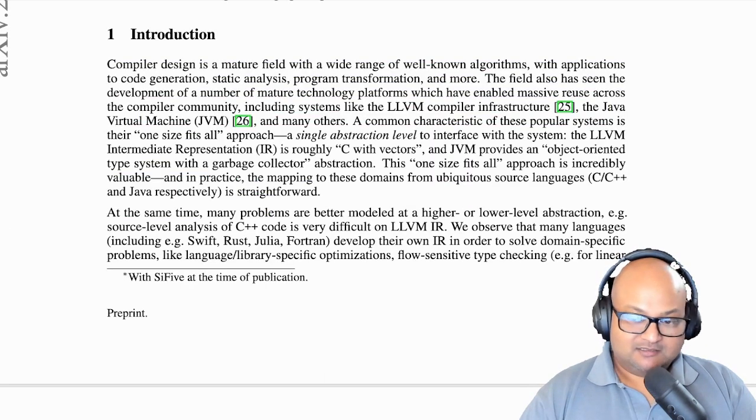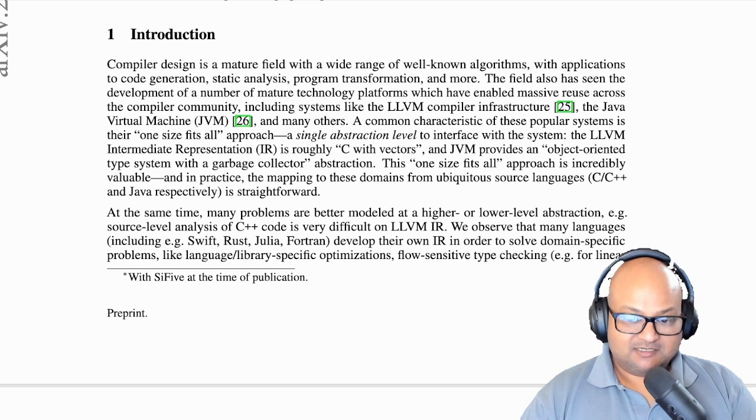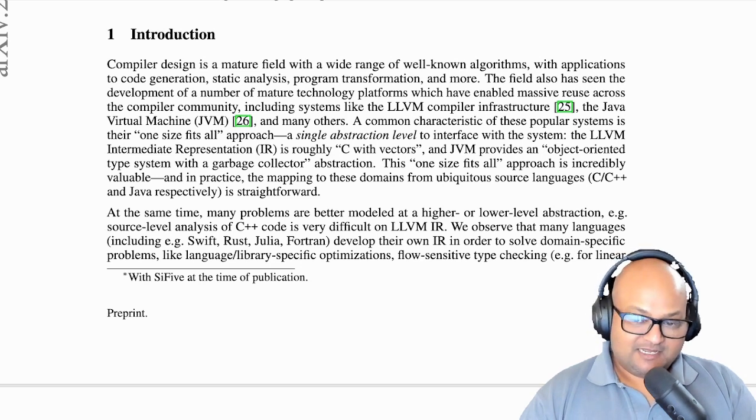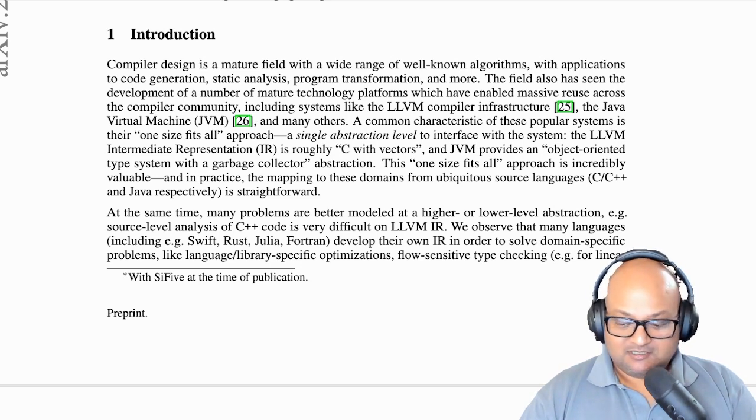Compiler writers love creating new intermediate representations because it's the way they solve problems. It's the hammer to all the code optimization nails that they see. And so you might ask, well, why do we need one more IR? You have things like the JVM, you have very mature infrastructure like LLVM. So why one more?